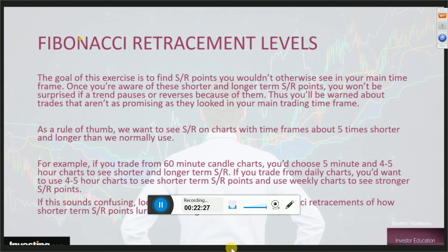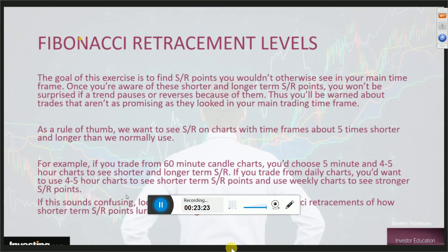Don't use Fibonacci retracements over short intervals. Day trading the foreign exchange market has a lot of volatility, so applying Fibonacci retracements over short time frames is ineffective — the shorter the time frame, the less reliable the retracement levels are. Volatility can skew support and resistance levels. You don't want to put a Fibonacci retracement on a 5, 10, or 15-minute chart; you want to stick with 30 minutes to 1 hour. The goal is to find support and resistance levels you wouldn't otherwise see in your main time frame.